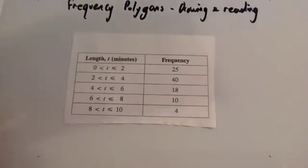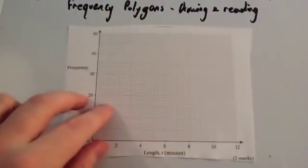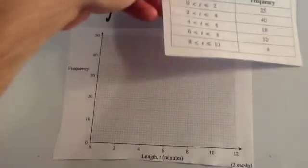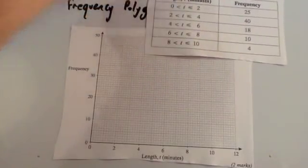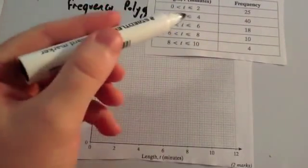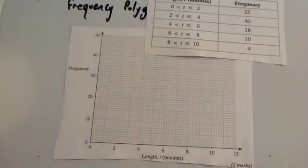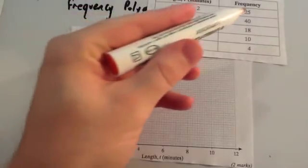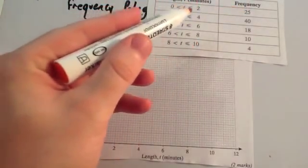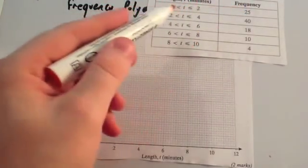In the exam question they typically draw the axes for you, and here's the set of axes here. Let's just put the frequency table here. So as you can see, the first category goes from 0 to 2 minutes and the frequency is 25.